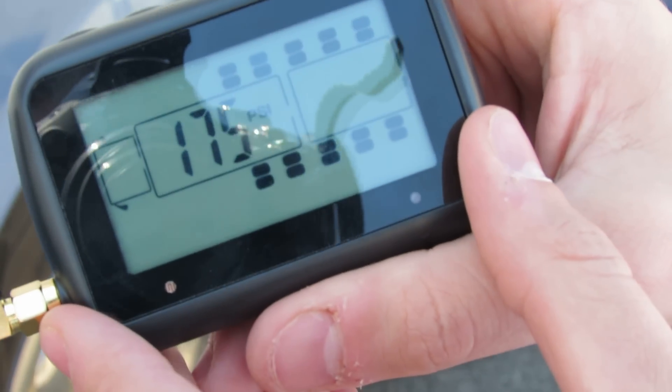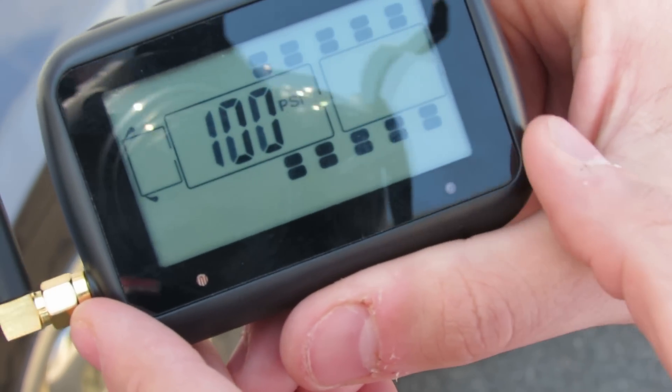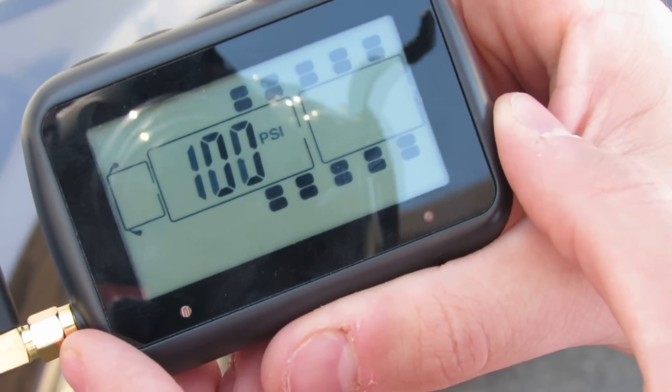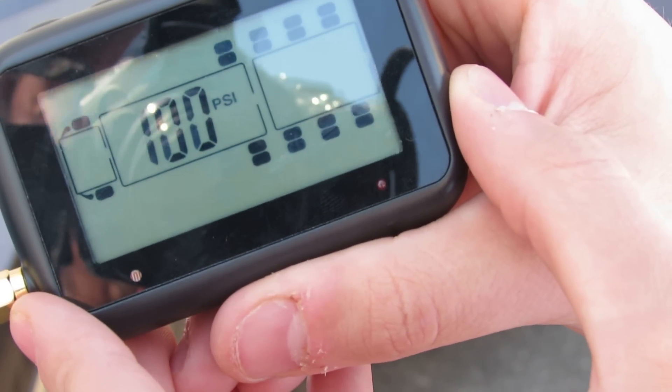We only have one tire on our monitor. So we will scroll over to the low pressure for this axle, represented by a low tire and 100 PSI. Scroll over to the axle where your tires are.